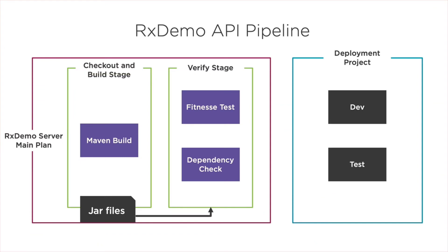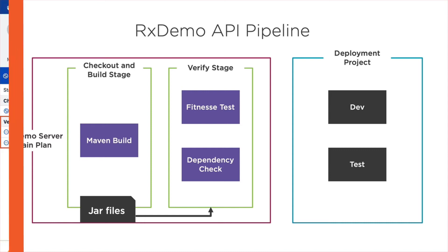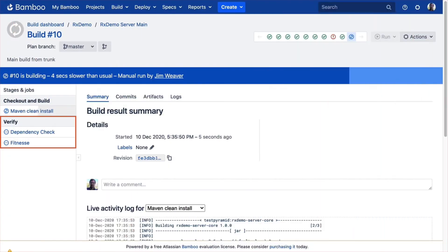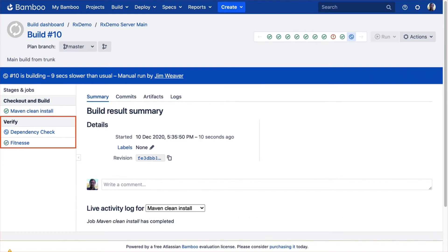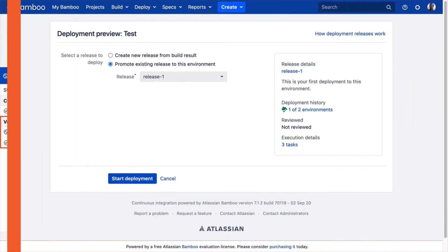Build and deployment pipelines are a critical part of any software application. In this course, which is a continuation of the Getting Started with Atlassian Bamboo course, we'll use Bamboo to construct a realistic build, test, and deployment pipeline for an application.